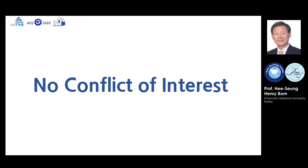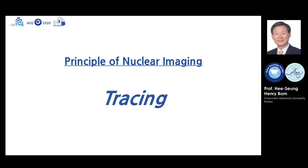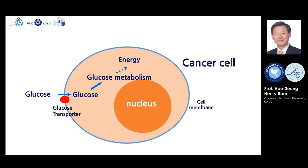If I select a single word related to the principle of nuclear imaging, I may say it is tracing. We use radioactive tracers to trace very small molecules to see biochemical processes in living cells of the body. For example, we want to trace the movement of glucose in a living body, such as in cancer cells. Glucose is an energy source of most cancer cells.